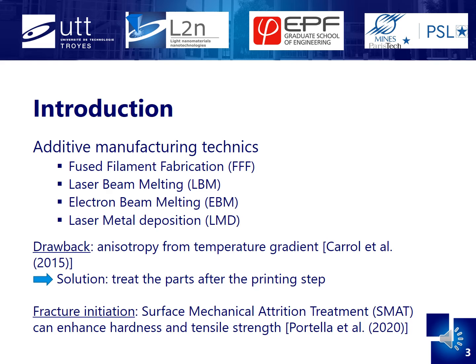One of the solutions is to treat the part once printed. Treating the material's surface can also improve the mechanical characteristics like fracture initiation. For example, surface mechanical attrition treatment, or SMAT, can enhance hardness and the tensile strength of a material by giving a nanocrystallized layer at the surface. But how can we observe the influence of surface treatment at a local scale?